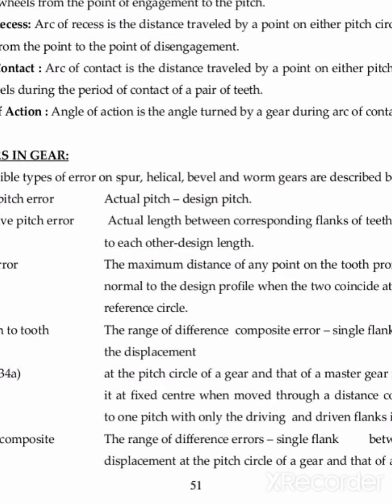Next is cumulative pitch error. When the design length is different from the actual length, then this cumulative pitch error takes place. The formula for cumulative pitch error is: design length value minus actual length between corresponding flanks of teeth not adjacent to each other. To find cumulative pitch error, we take actual lengths between two teeth — corresponding flanks of both teeth which are not adjacent to each other.